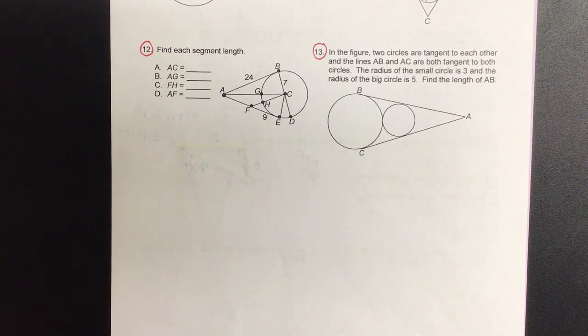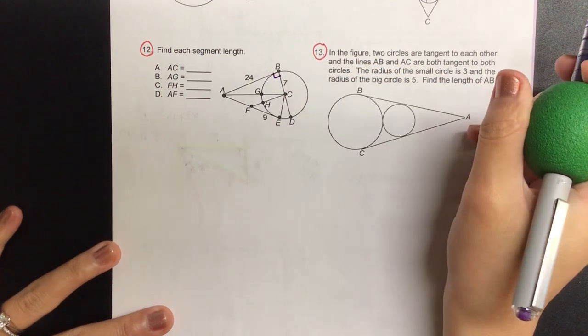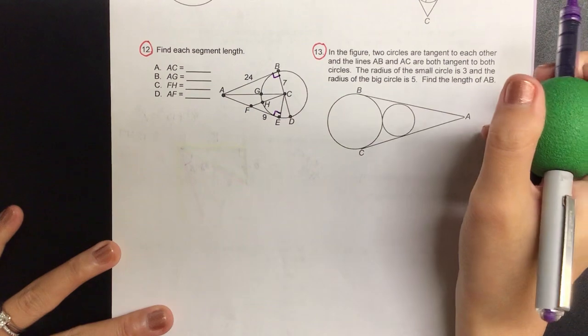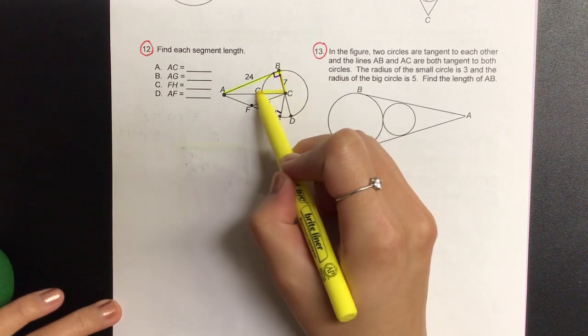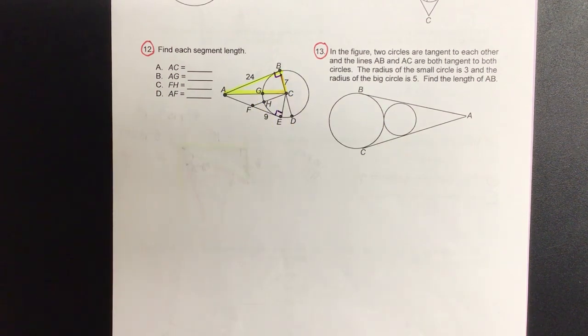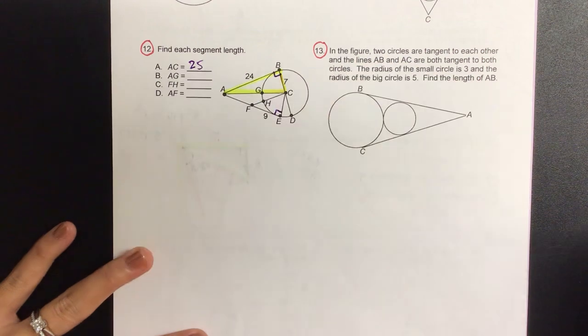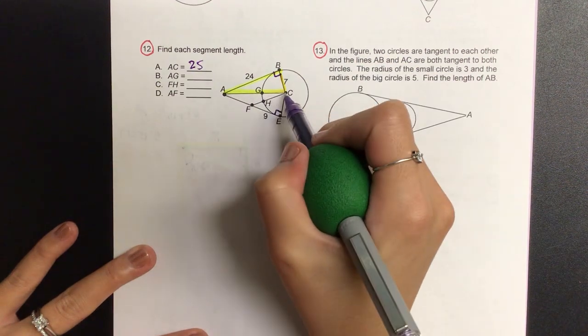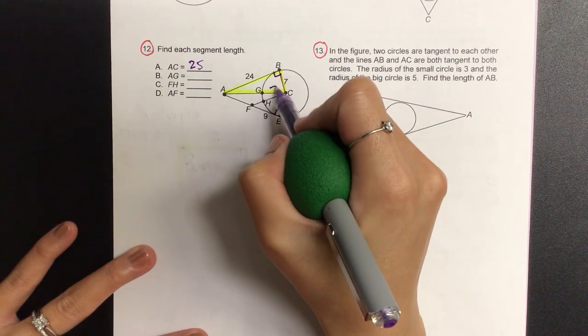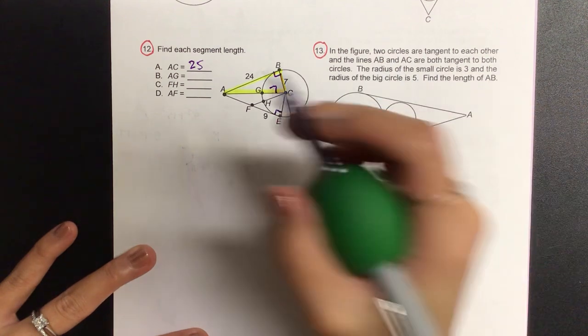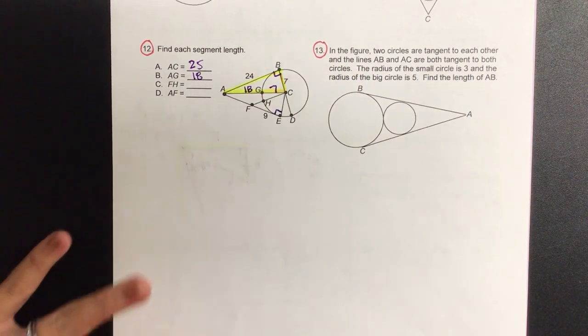So let's go ahead and analyze each part on this one. First part says find AC. Let's go ahead and notate our right angle and our right angles over here too. So within this triangle that I'm going to highlight, AC is our hypotenuse, right? So that would be our triple 7, 24, and 25. And then for AG, if the whole thing is 25 and we have BC as a radius and GC is also a radius, we're looking at 7. So what is 25 minus 7? 18, so that would be our AG.